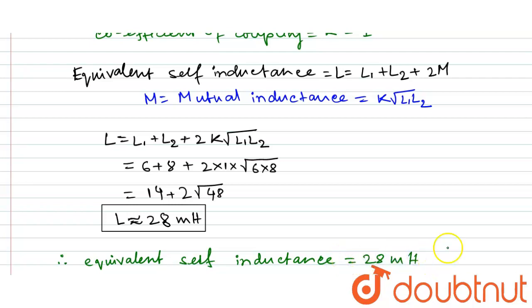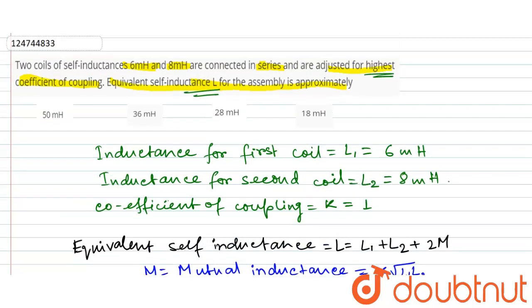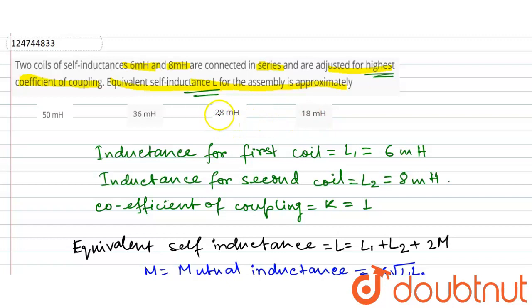Looking at the options: 50 millihenry, 36 millihenry, 28 millihenry, and 18 millihenry. The final answer is 28 millihenry.